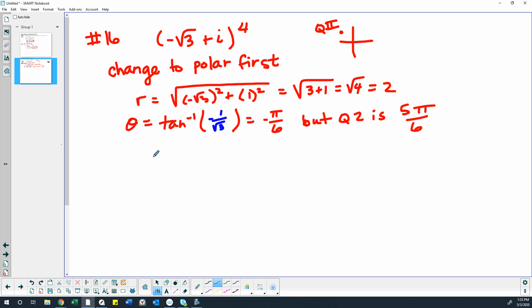So now we can change this to, we can use our CIS form if you'd rather. So CIS theta, or you can use the R times cosine theta plus I sine theta.